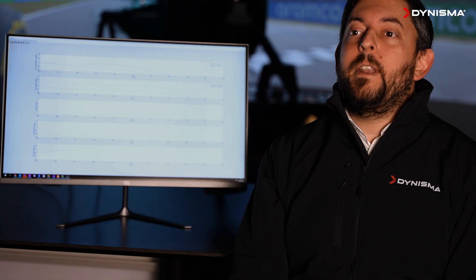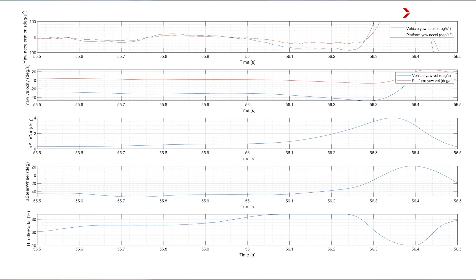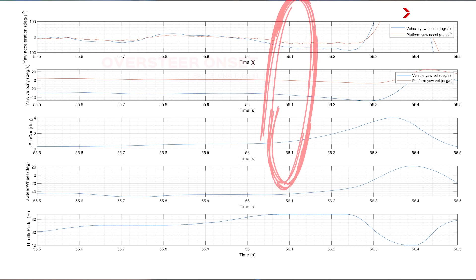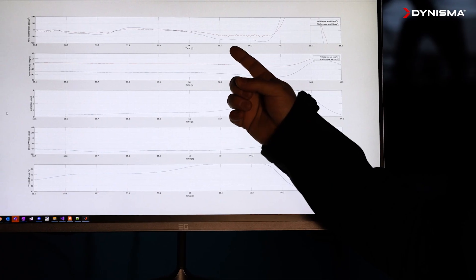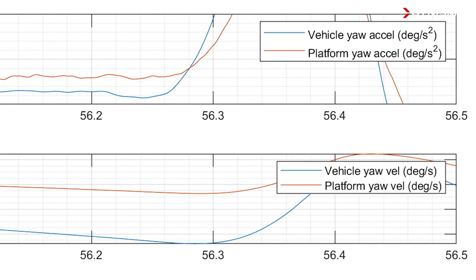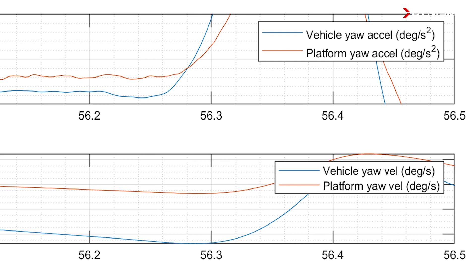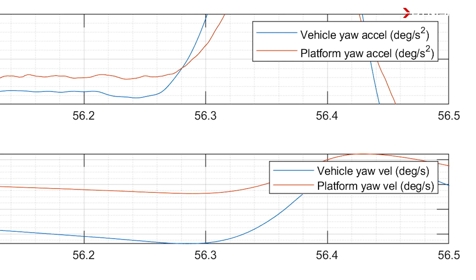We're going to have a look at an oversteer event at Turn 10 at Barcelona. What we can see here is that when the back end of the car starts to step out, we see that in the yaw acceleration of the simulated vehicle, and then a very short time later — in this case four milliseconds — we see the same yaw acceleration change in the motion platform. That's a measured movement from the sensors we have on the system.